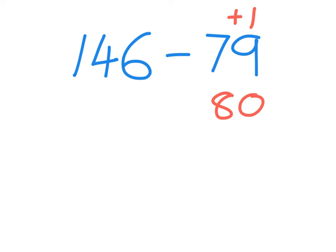So if I plus one to this side, because it's equal adjustments, what do I have to do? I have to do the same to the other side. I'm going to plus one to this side. $147. $147 minus $80. Wow, that's a little bit more tricky, isn't it?